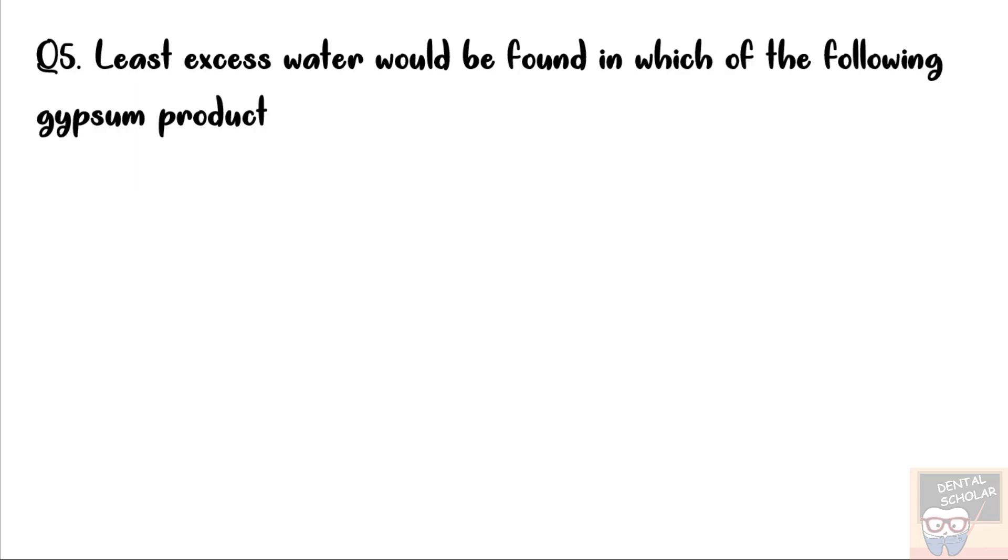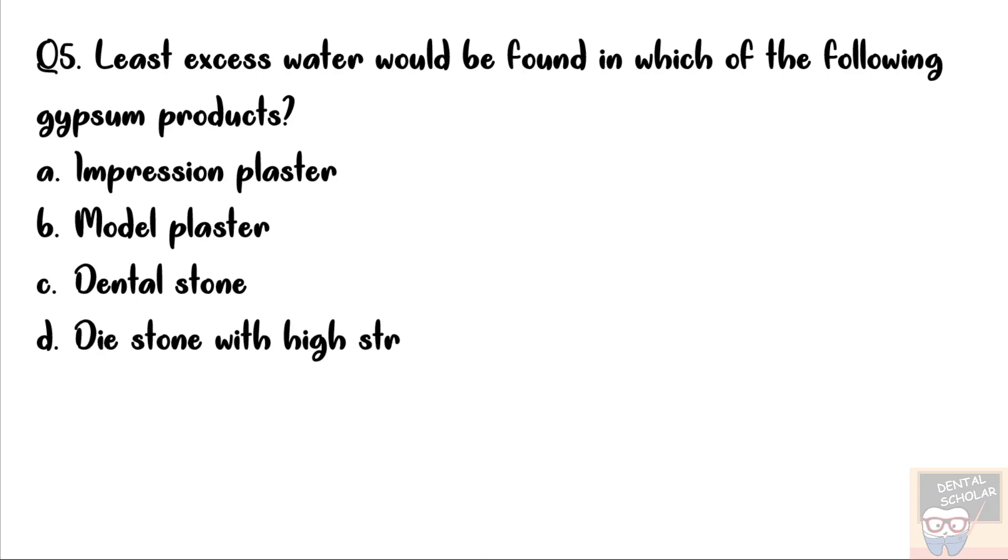Let's now go to question number 5. Least excess water would be found in which of the following gypsum products? Option A, impression plaster, model plaster, dental stone, or die stone with high strength. The correct answer here is option D, that is die stone with high strength.